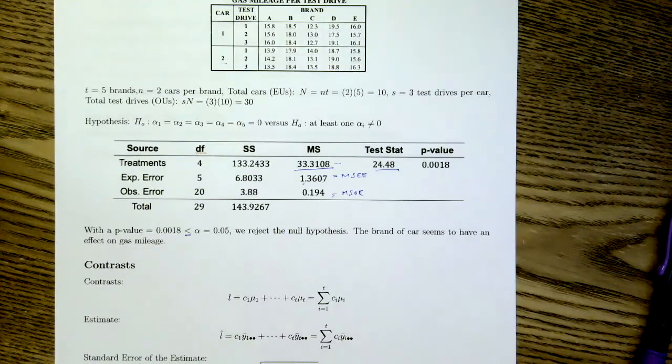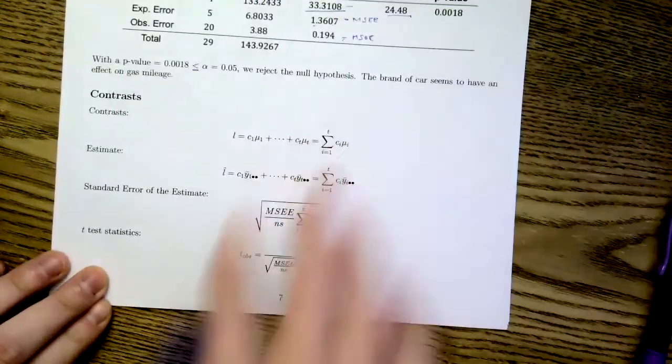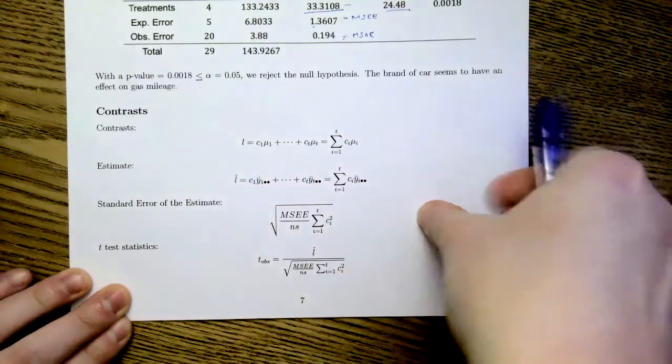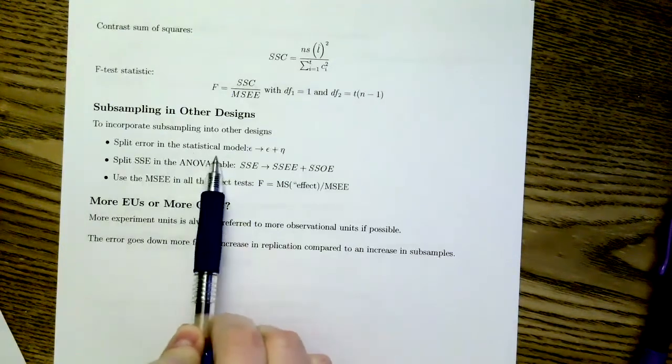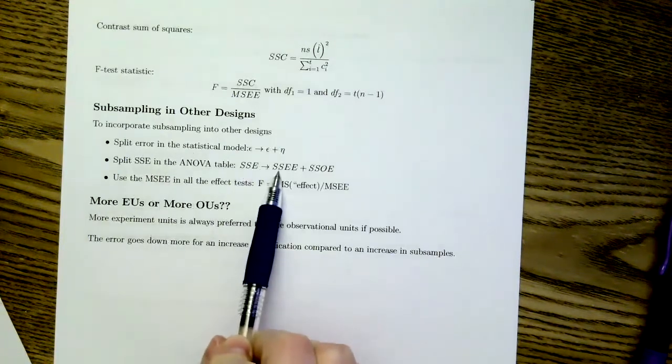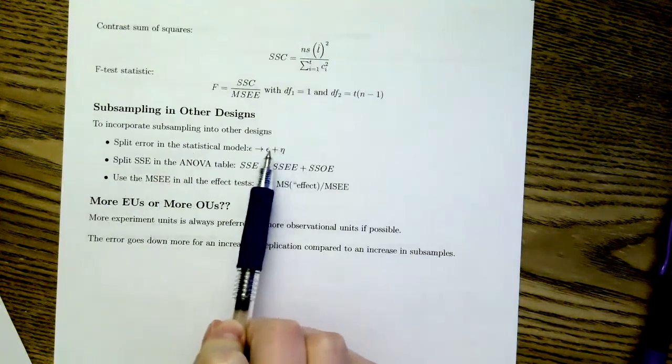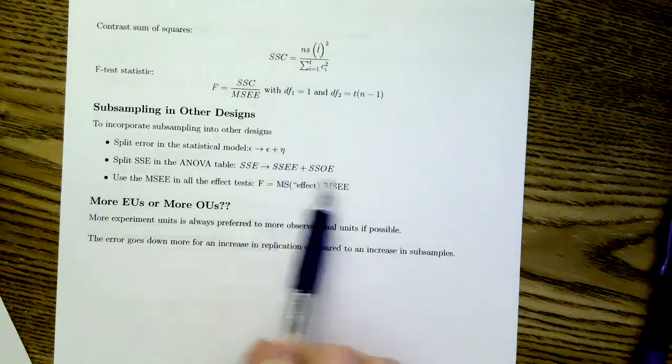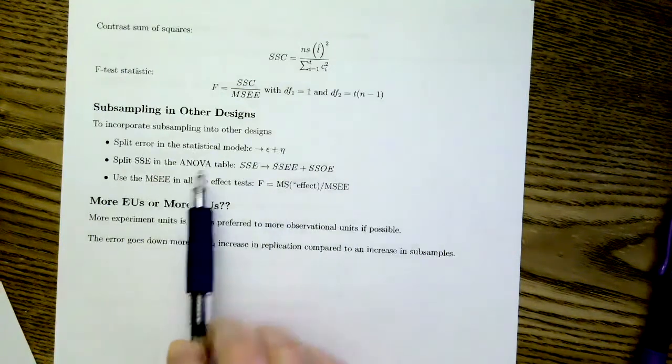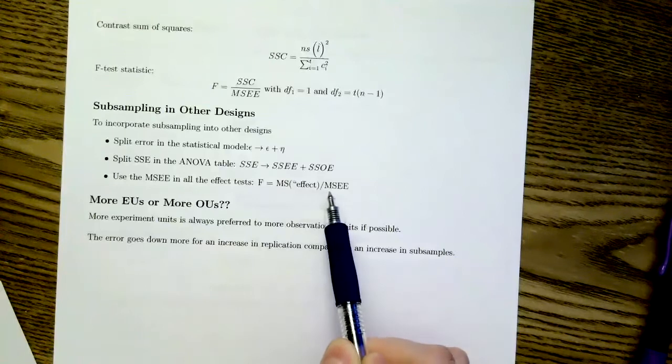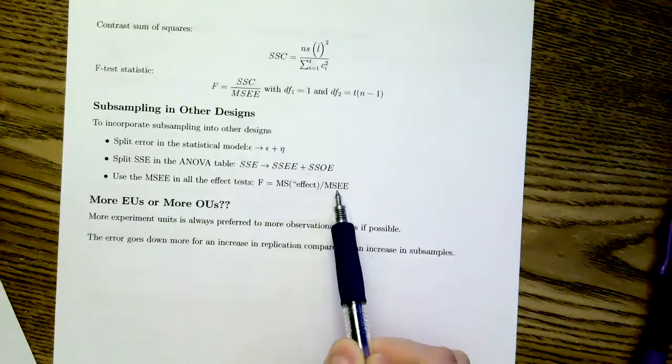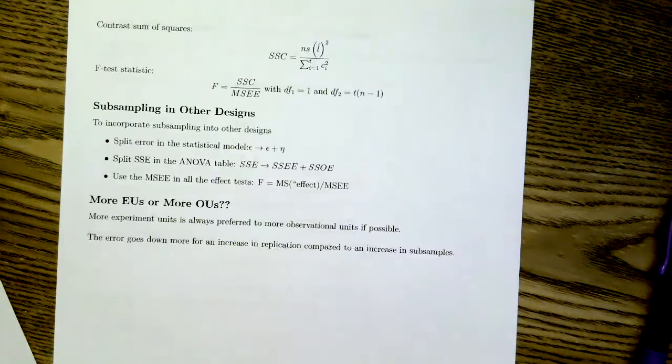Additionally, with subsampling designs, you can go through your contrasts. You can incorporate subsampling into other designs. It's all about splitting up that error term in the statistical model so that you have your epsilon and eta, your experimental unit error and your observational unit error. In each case, regardless of your design, you would still want to be dividing your F statistic by your MSEE, your experimental unit error.